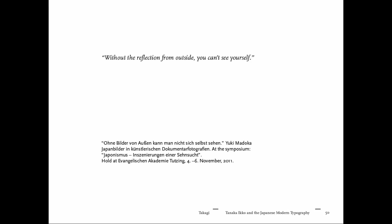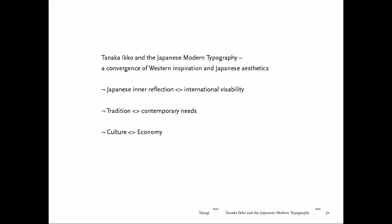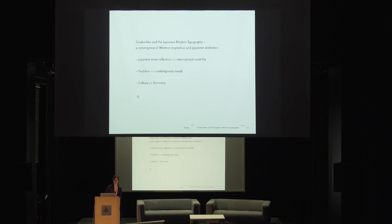We always need this view from outside to identify maybe what's our own style or aspiration. To sum up and position Tanaka: on one hand he was a designer, but also an editor, curator, conference organizer, and entrepreneur. The part where he converted Western inspiration and Japanese aesthetics was to have this Japanese inner reflection. At the same time he made Japanese design visible to an international readership and audience — bridging tradition and contemporary needs, culture and economy.